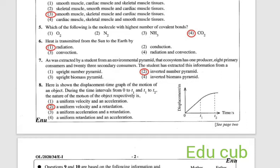Fifth question: which of the following is the molecule with highest number of covalent bonds? Oxygen has two bonds, nitrogen has three bonds, NH3 ammonia also has three bonds, carbon dioxide has four bonds. So the highest number of covalent bonds is present in carbon dioxide. Answer is the fourth one.